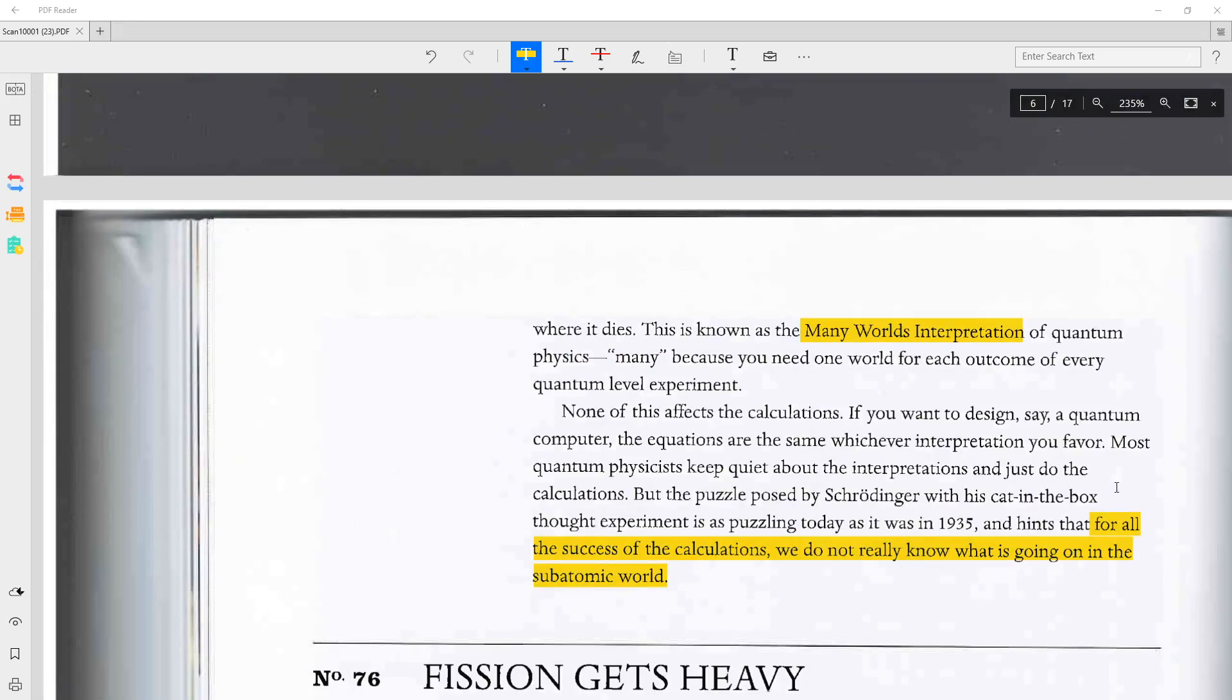This is known as the many worlds interpretation of quantum physics. Many because you need one world for each outcome of every quantum level experiment. None of this affects the calculations. If you want to design, say, a quantum computer, the equations are the same whichever interpretation you favor. Most quantum physicists keep quiet about the interpretations and just do the calculations. But the puzzle posed by Schrödinger with his cat-in-the-box thought experiment is as puzzling today as it was in 1935 and hints that for all the success of the calculations, we do not really know what is going on in the sub-atomic world.